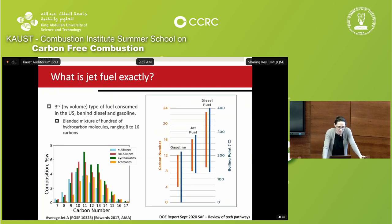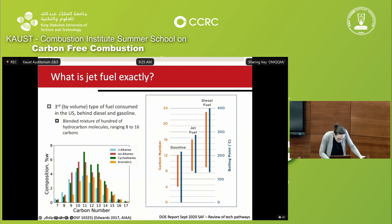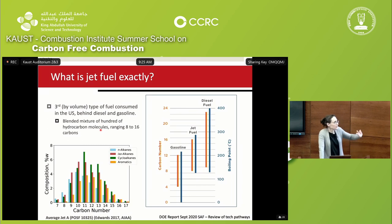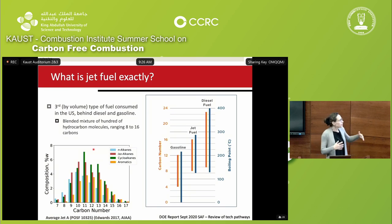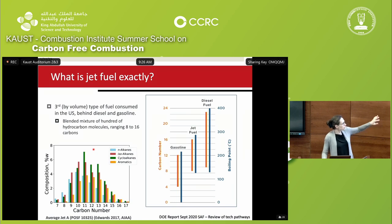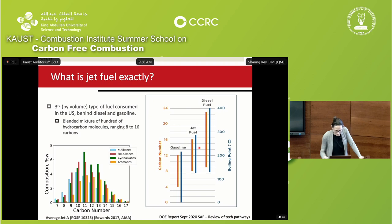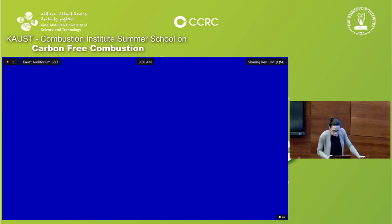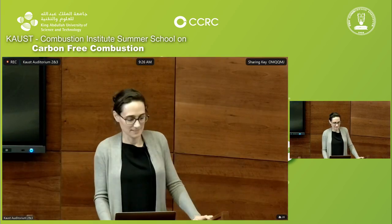If you want to talk about SAF, we probably want to know what jet fuel is exactly. Jet fuel is the third most consumed fuel in the US, behind diesel and gasoline. It's a blended mixture of around 100 hydrocarbon molecules ranging from 8 to 16 carbons. You can identify the molecules in three classes: alkanes, isoalkanes, cycloalkanes, and aromatics, roughly distributed along the carbon numbers with an average carbon number of 12. If you look at the distillation curve, jet fuel is a middle distillate, and there's a clear overlap between the distillation curve of jet fuel and that of diesel fuel.